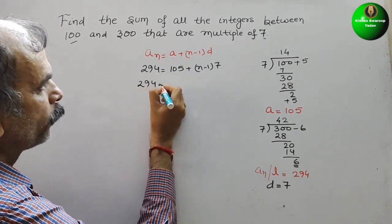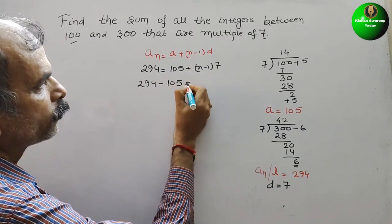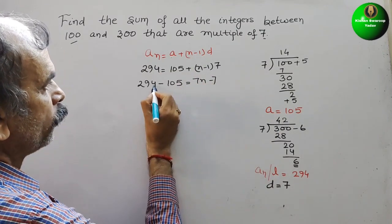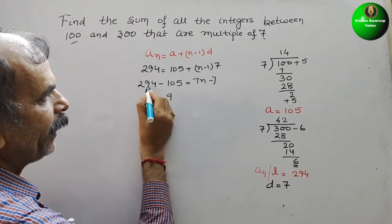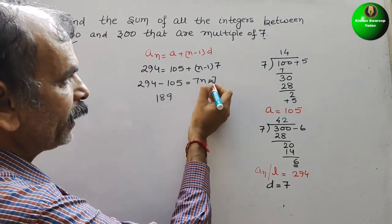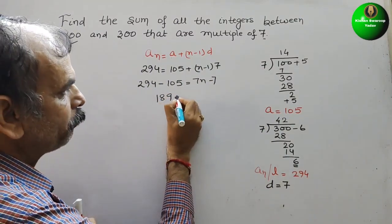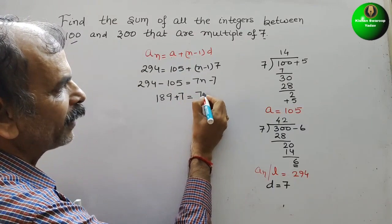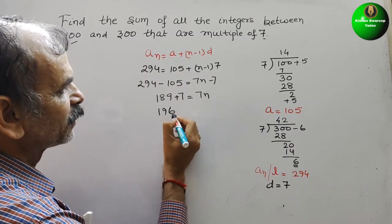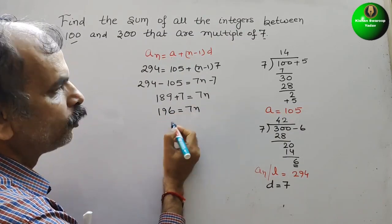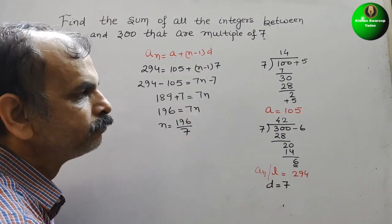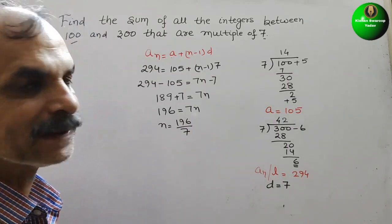So it will be 294 minus 105, so it will be 7N minus 7. Now, solve this. 14 minus 5 is 9, 8, 2 minus 1 is 1, so 189. Bring this minus 7 left side, so it will be plus 7, this is equal to 7N. Now, solve this. So this will be 196 is equal to 7N. So what is your N? N is 196 by 7.